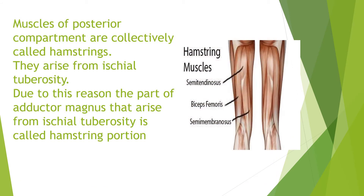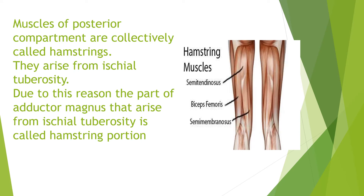The muscles of the posterior compartment are collectively called the hamstrings. For this reason, the part of the adductor magnus that arises from the ischial tuberosity is also called the hamstring portion.